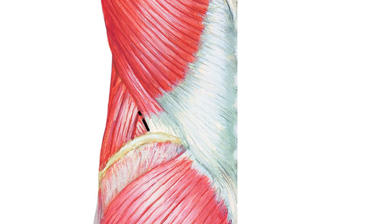The lateral boundary is formed by the posterior border of the external oblique abdominus muscle fibers. The base is formed by the iliac crest, and the apex is formed by the joining of the medial and lateral boundaries. At the floor of this lumbar triangle of Petit's, we can identify the internal oblique abdominus muscle fibers, which are weak fibers contributing to the floor.